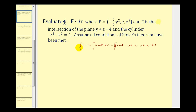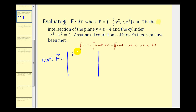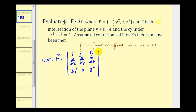So to evaluate this line integral, we'll apply Stokes' Theorem and evaluate this surface integral instead. We'll start by determining the curl of the vector field F. We can use a three by three determinant where the first row will be i, j, k, the second row will be the partial derivative operators, and the third row will be the components of our vector field. We'll go ahead and use the cofactor expansion method.